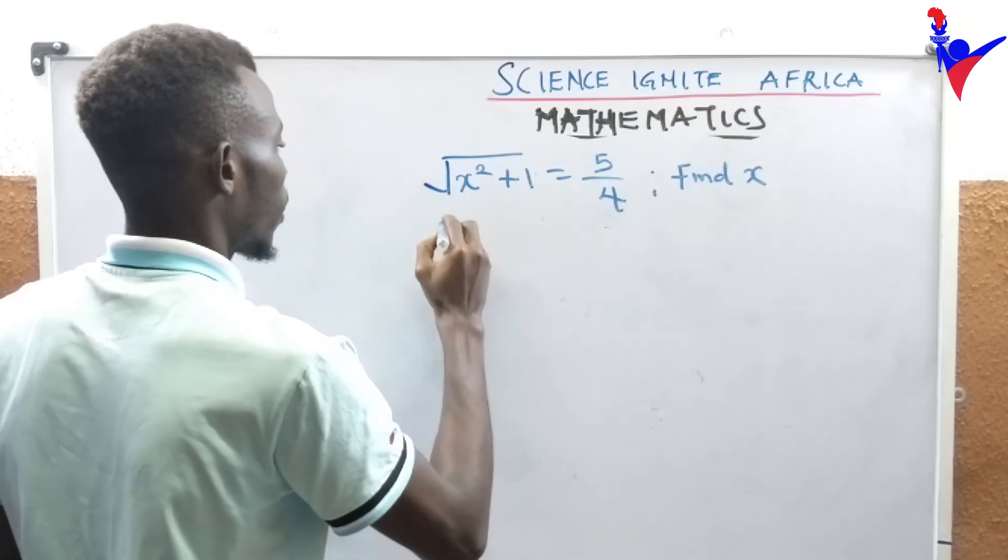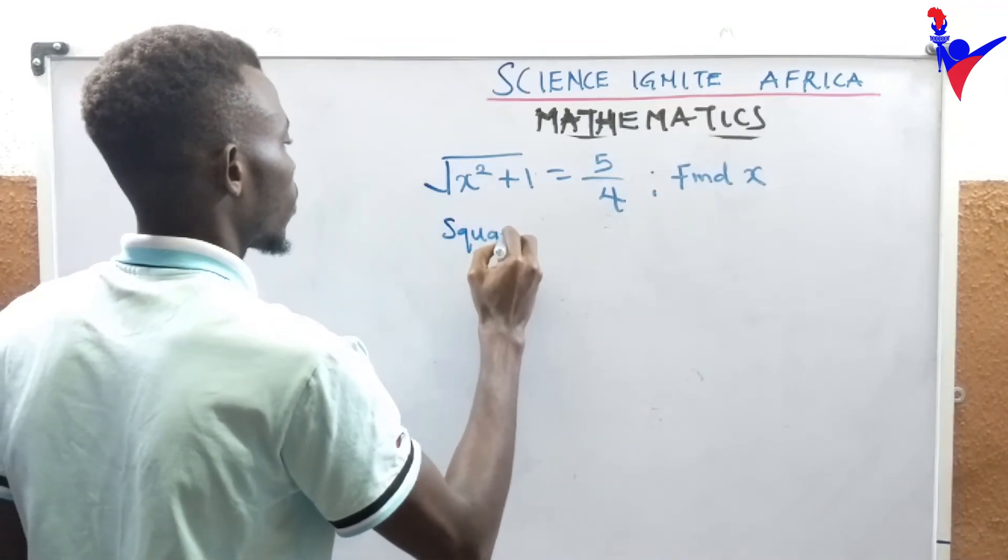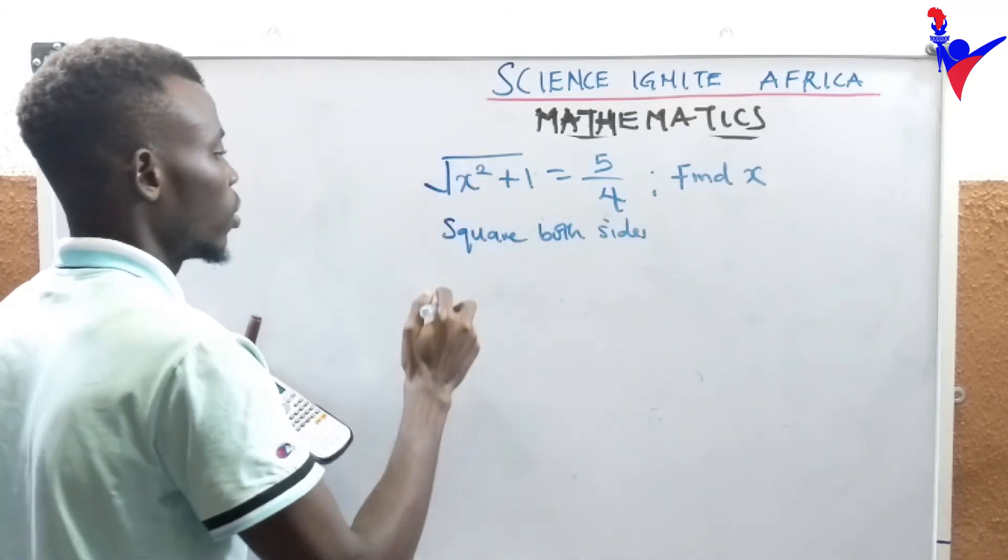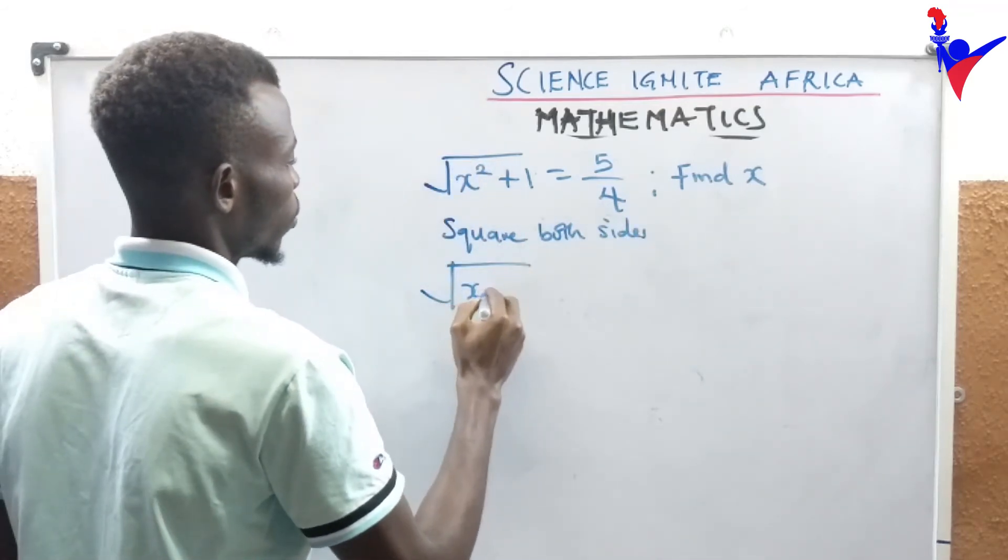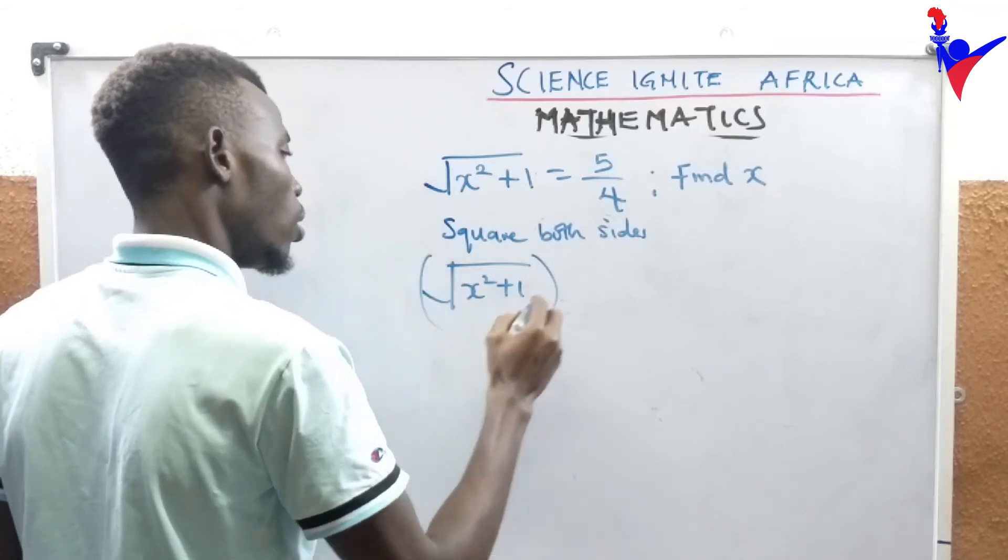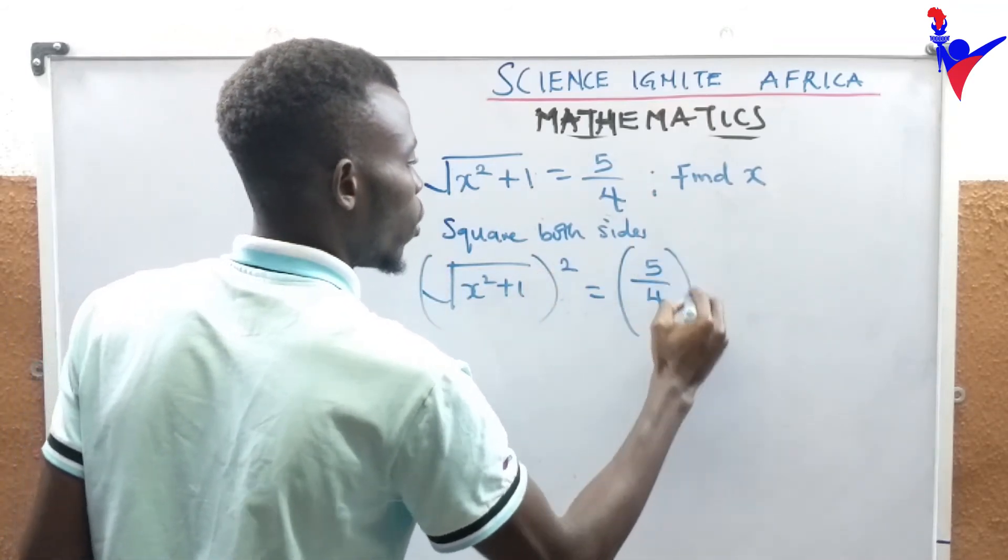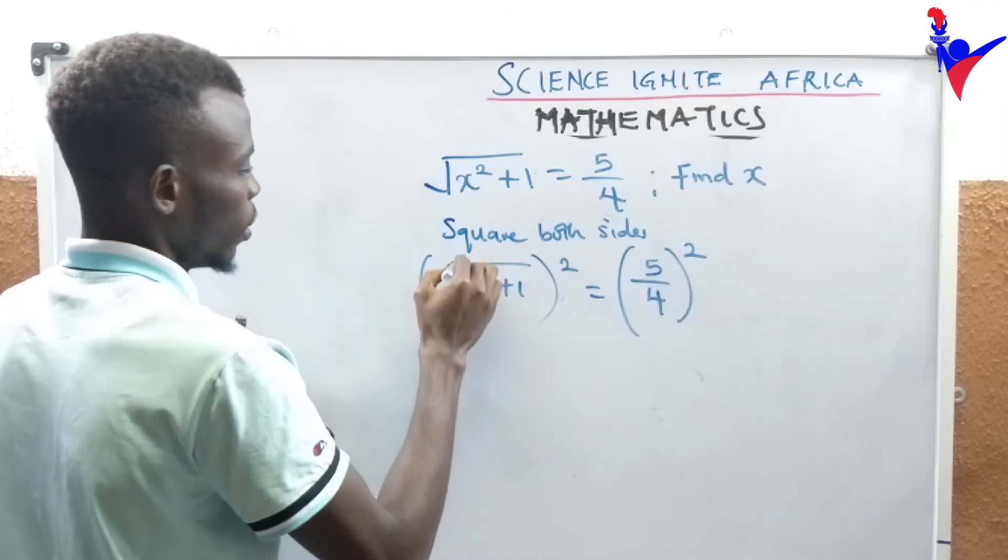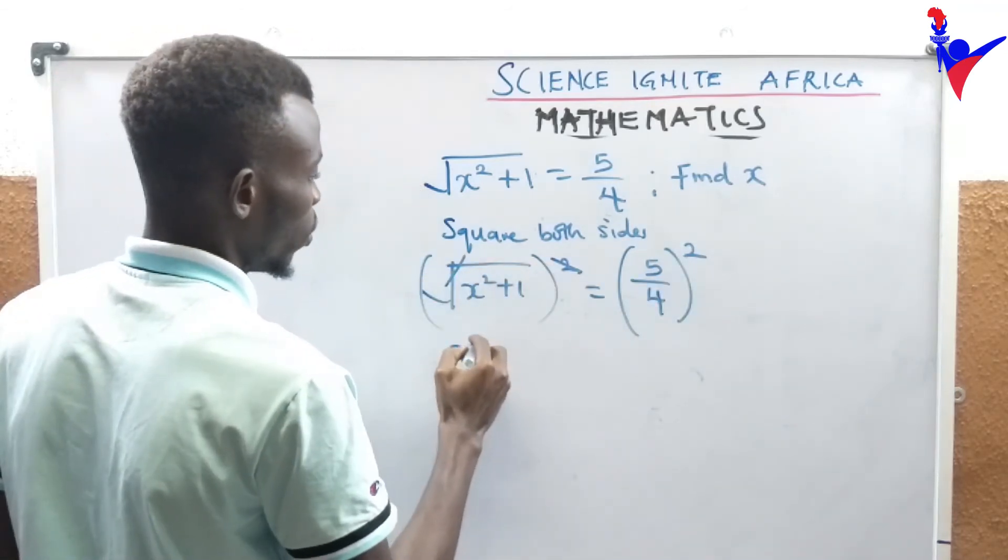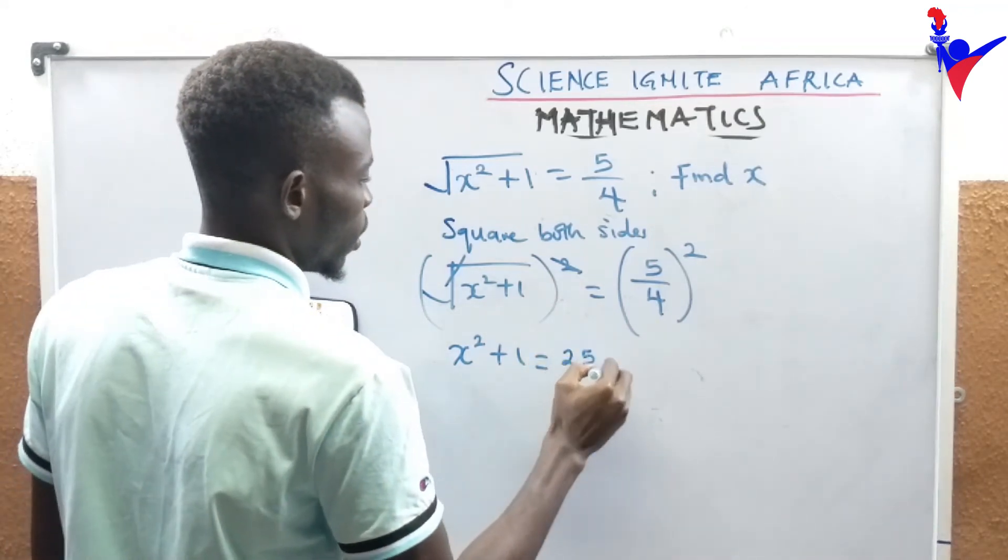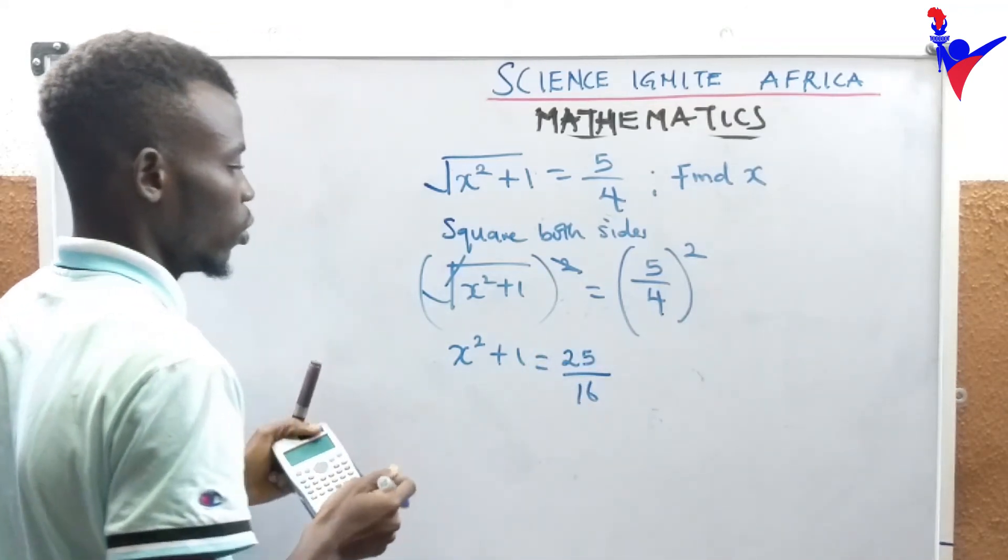We will square both sides because I want to remove this square root. This is x squared plus 1 all over square equals 5 over 4 squared. This is canceling, I'm left with x squared plus 1 equals 5 squared, that is 25 divided by 16.